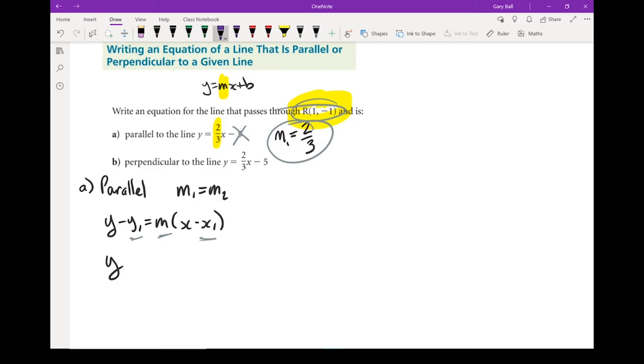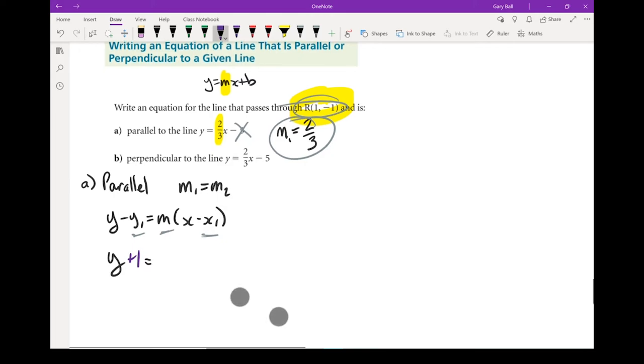y. Now instead of y1, I'm going to put whatever y1 is. It's a minus 1. I have to put the opposite sign. So it's going to be y plus 1 equals, instead of the m, I'm going to put my two-thirds.